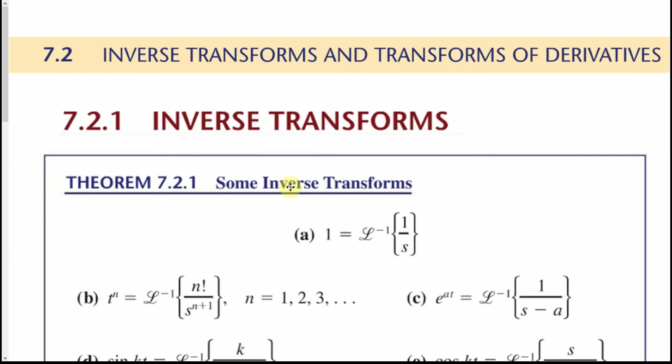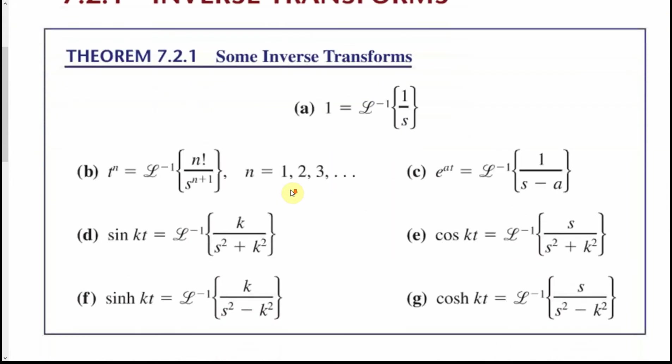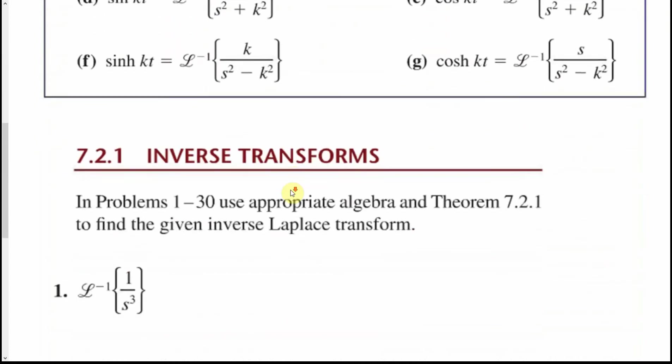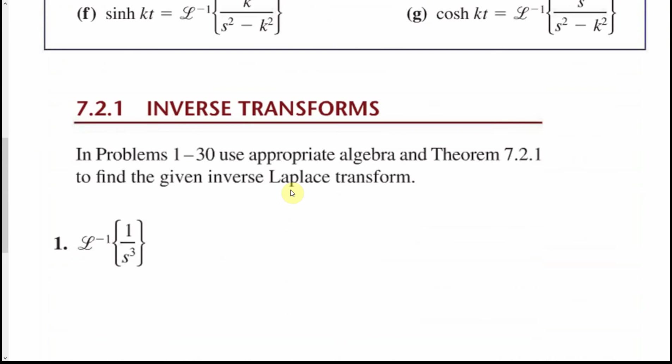This section covers inverse transforms and transforms of derivatives. It takes the previous section and reverses the order: given the result of a Laplace transform, we find the inverse to recover the original function. These seven formulas for inverse transforms are essentially the reciprocals of the initial Laplace transforms from the previous section, and we use that to find inverse transforms.